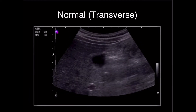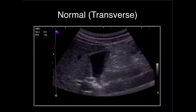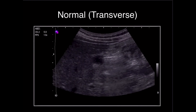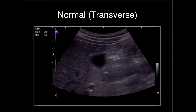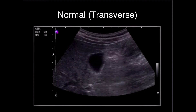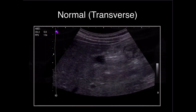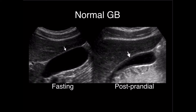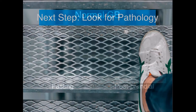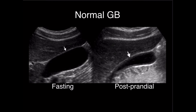Here we have a normal transverse image of the same gallbladder — it looks more circular or sometimes more triangular. Again, fan through the entire structure from one end to the other until it disappears so you don't miss any abnormal pathology. On the left, we have a normal gallbladder that appears larger due to the patient's fasting state — when you haven't eaten for a while, the gallbladder enlarges, making it easier to find. On the right, we have the postprandial contracted state of the gallbladder where the wall appears slightly thickened, which can sometimes be a normal finding depending on the degree of distention.